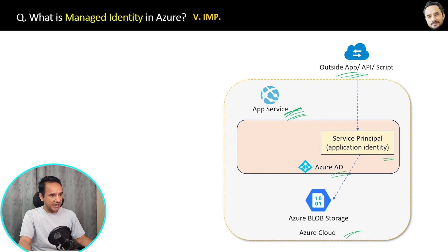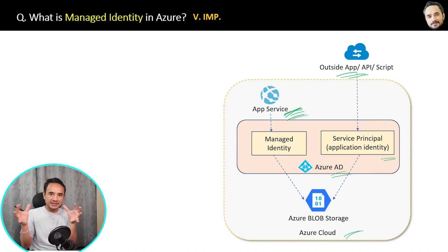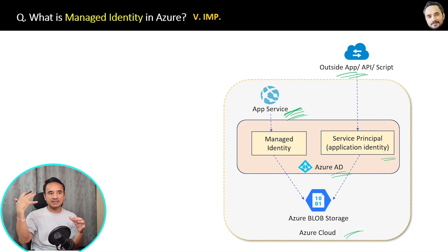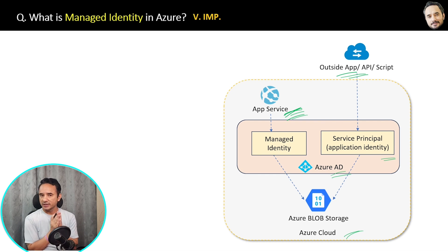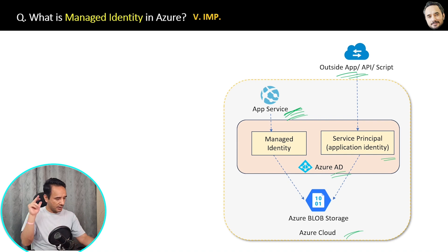That shortcut is managed identity. By using managed identity, all your Azure resources can access each other by default — they do not need a service principal. Service principal is for external apps, for outside apps. But inside the same Azure account it's not required. Managed identity handles all the access between resources inside the same Azure account.